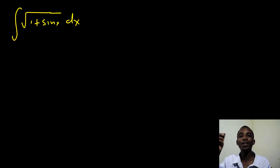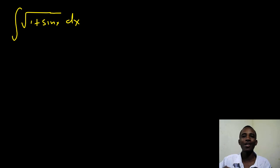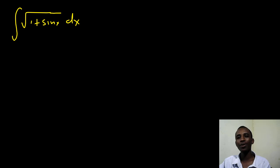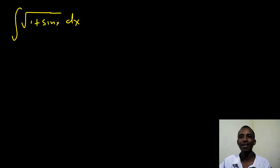We have the integral of the square root of 1 plus sine x. Before we do this integral, let's try to simplify it into a more manageable form by multiplying it with another term.